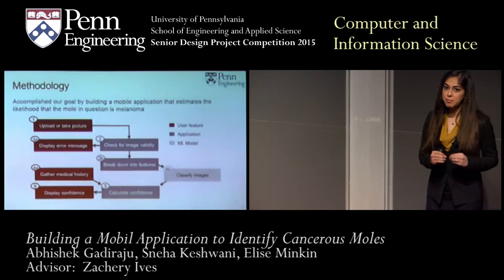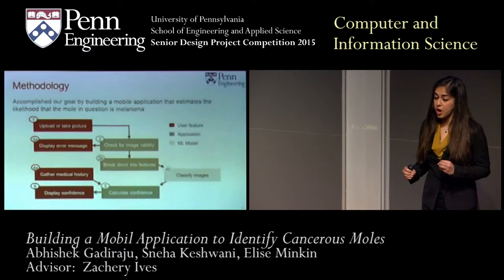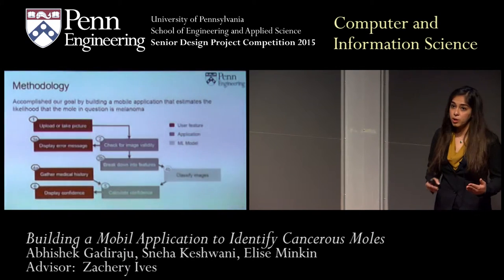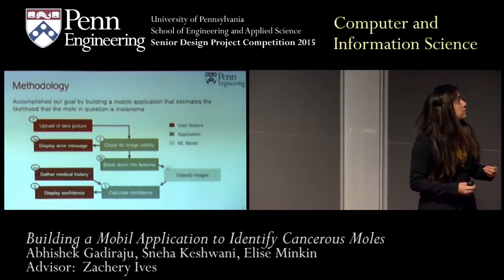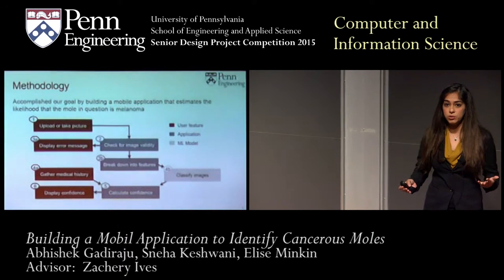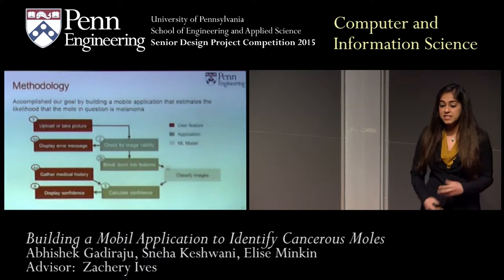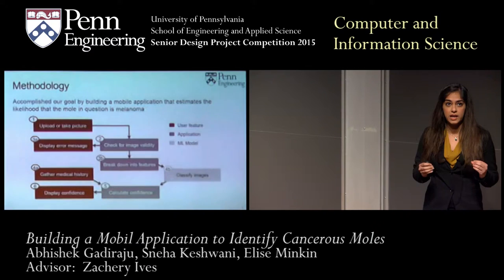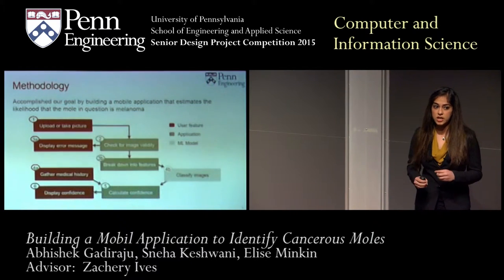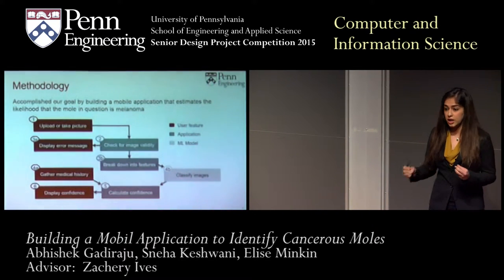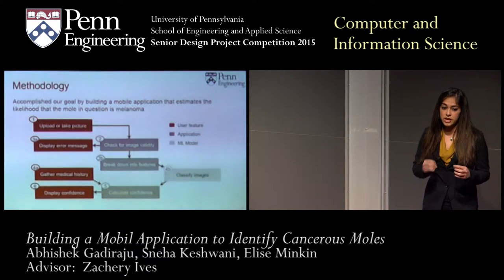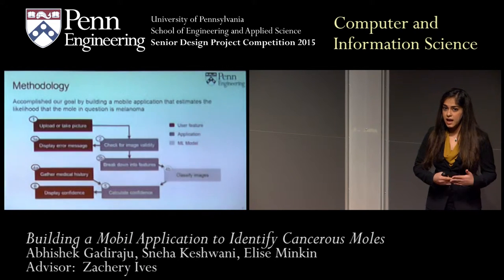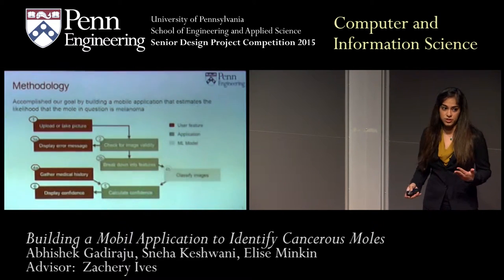We accomplish this by building a mobile application that communicates with a machine learning model. The app allows the user to either upload or take an image of their mole, then asks a few simple questions like how much sun exposure they've had and whether the mole has been evolving. It breaks the image down into features such as asymmetry, border, and color, and classifies the image as melanoma or not, displaying a confidence score for how likely the mole is cancerous.